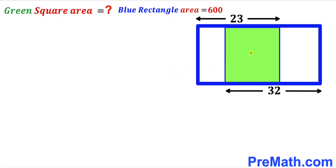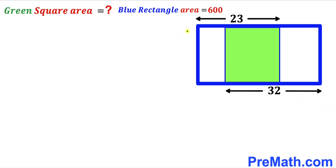Welcome to PreMath. In this video we have a green shaded square fully confined in a blue rectangle, such that this horizontal segment length is 23 units whereas this horizontal length is 32 units. Moreover, the area of this blue rectangle has been given as 600 square units, and our task is to calculate the area of this green shaded square.